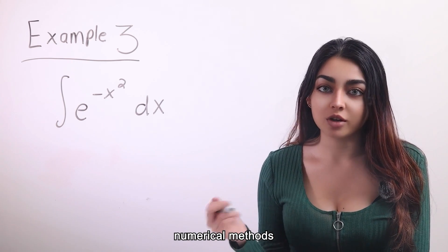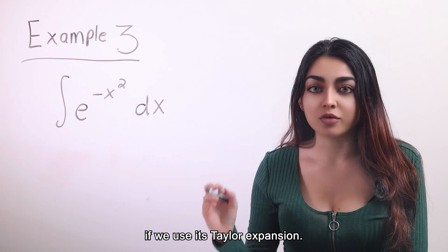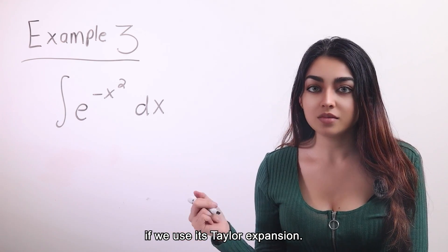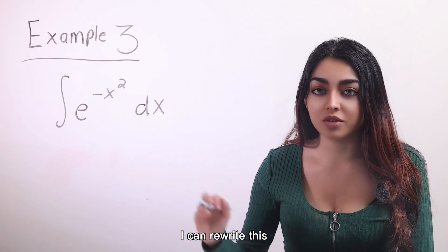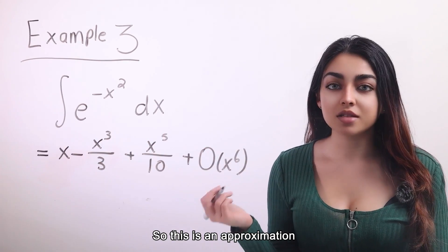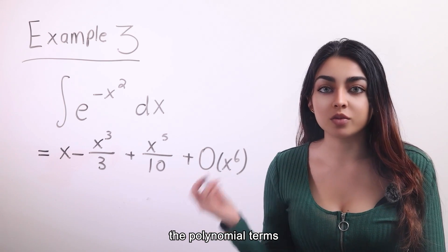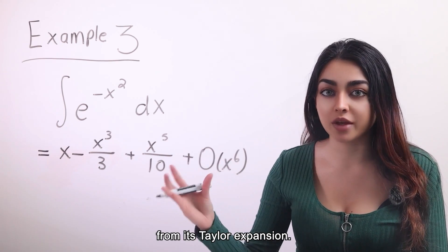However, we can use numerical methods to integrate this, which can be easily done if we use the Taylor expansion. So for example, I can rewrite this integral as follows. So this is an approximation which we can get by integrating the polynomial terms from its Taylor expansion.